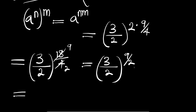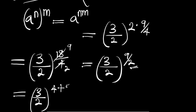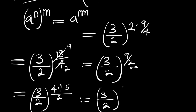We can rewrite 9 divided by 2 as the sum of 4 plus 5, divided by 2. So we have (3 divided by 2) to the power of (4 plus 5) divided by 2. This means we can rewrite this as (3 divided by 2) to the power of 4 divided by 2, plus 5 divided by 2.